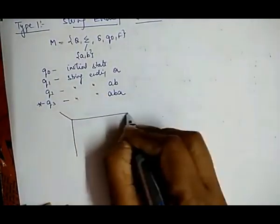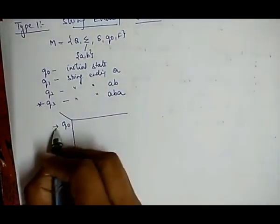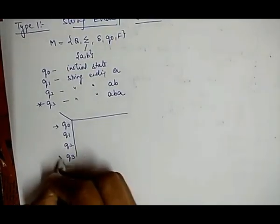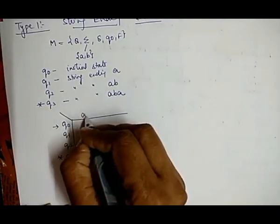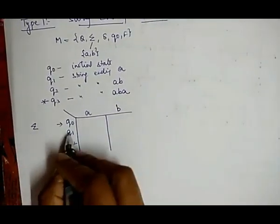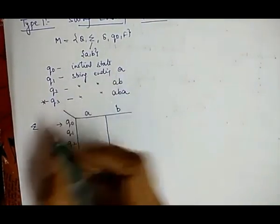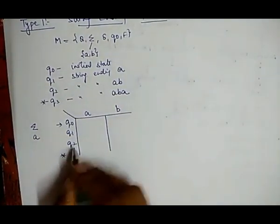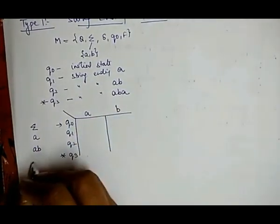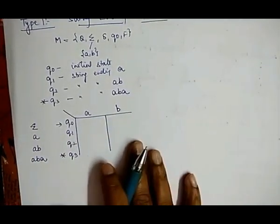Q₀ is the initial state, then Q1, Q2, and the final state Q3 marked with an asterisk. We have two input values: A and B. Q₀ is represented by epsilon (null value), Q1 represents strings ending with A, and Q2 represents strings ending with AB. We construct the transition table by combining these values to find the next state for each input.